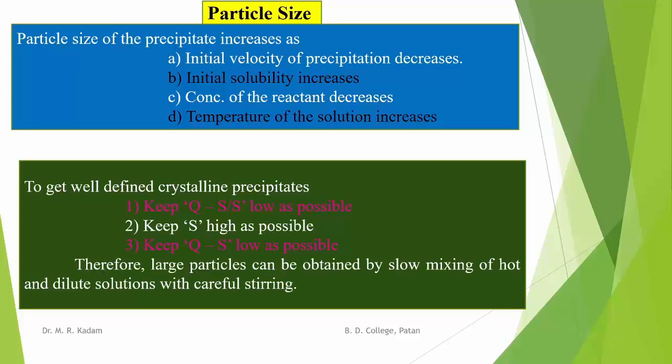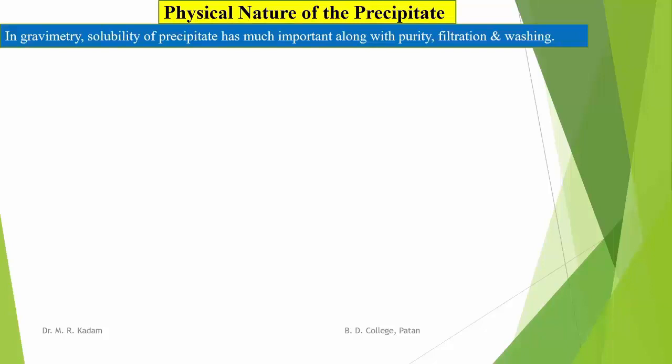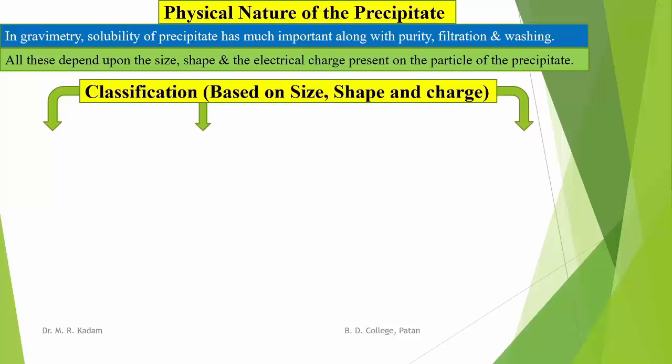Therefore, large particles can be obtained by slow mixing of hot and dilute solutions with careful stirring. Now we see the physical nature of the precipitate. In gravimetry, solubility of the precipitate is very important, along with purity, filtration, and washing. All these processes depend upon the size, shape, and electrical charge present on the surface of the particles of the precipitate.